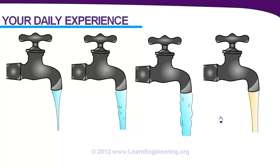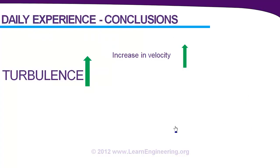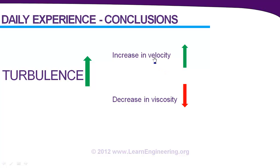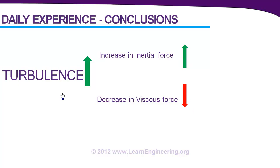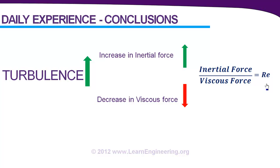Summarizing these two findings: turbulence increases with an increase in fluid velocity, and it also increases with a decrease in viscosity of the fluid. Velocity of the fluid increases with an increase in inertial force — the force responsible for accelerating the fluid — so it is equivalent to say turbulence increases with an increase in inertial force. Similarly, if viscosity is low, the viscous force is also low, so turbulence increases with a decrease in viscous force. It is therefore obvious that when the ratio of these two forces increases, turbulence increases — and this ratio we call the Reynolds number. When the Reynolds number of the flow increases, turbulence increases.